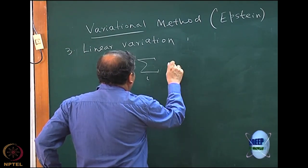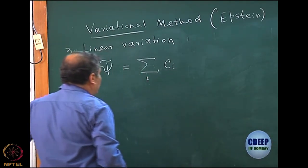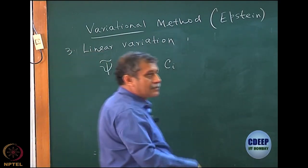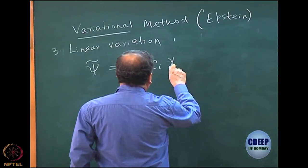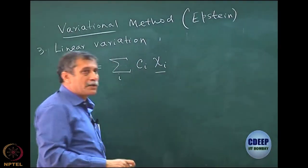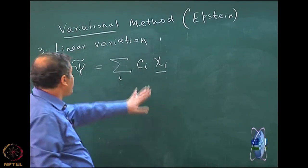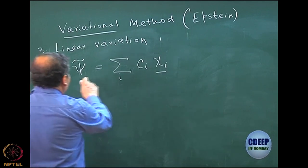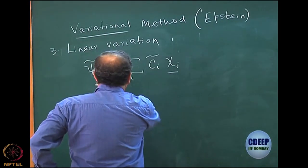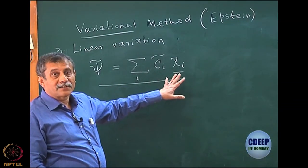Let us call some c_i. Do not confuse these c_i's with the other c_i. Some basis function c_i times chi_i. Do not confuse these chi_i's with spin orbitals — they are the basis for n-particle, n-electron problems. So I write my psi tilde as a linear combination of chi_i, where chi_i's are known basis functions.